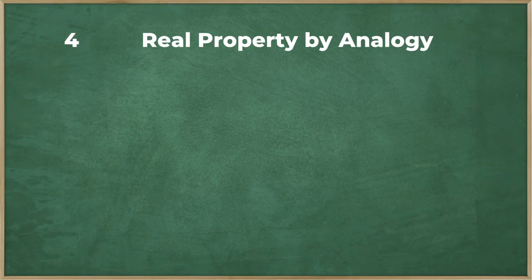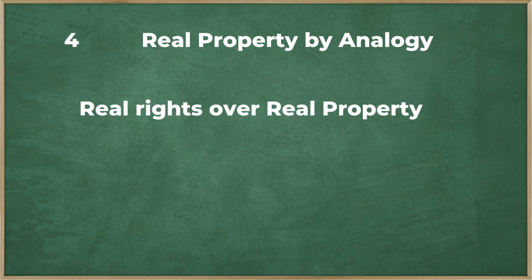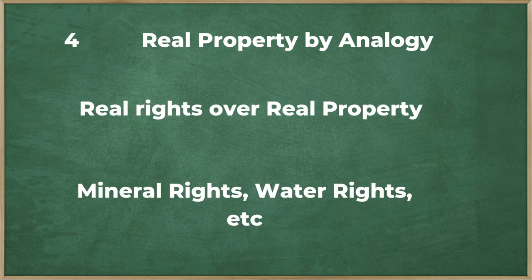Number four: real property by analogy. The last group involves real rights of immovable properties. This classification tackles mineral rights and other rights.